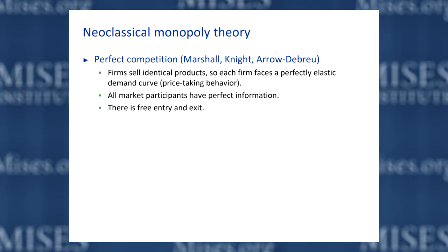Just to recap what we talked about last time: most neoclassical monopoly theory is really best understood in contrast with the neoclassical understanding of competition — the so-called model of perfect competition, which has its origins in Alfred Marshall's writings, but was really perfected by Frank Knight and also by Kenneth Arrow and Gerard Debreu as they developed the most formal mathematical version of competition theory. Some version of this is in almost all mainstream economics textbooks.